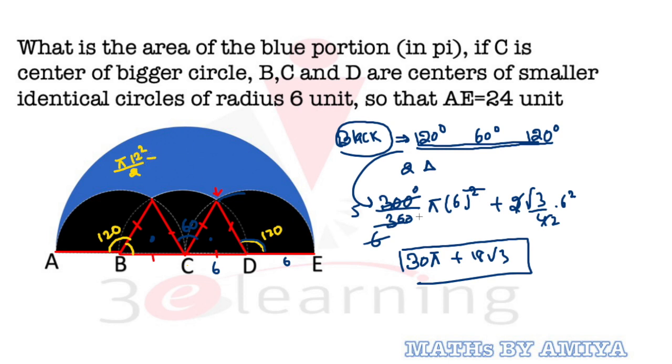Because semi circle hai. Minus this figure is nothing but thirty pi plus eighteen root three. So this one is nothing but 144, 72 pi minus thirty pi. Answer is nothing but forty two pi minus eighteen root three. So answer of this question is nothing but 42π minus 18√3.